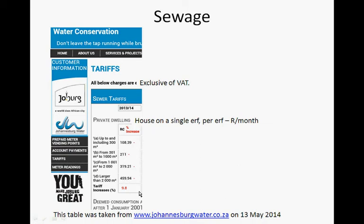If you have a property larger than 2000 square meters, you will pay R459.94 per month. They also show the tariff increases, probably for the next year, since this was for the 2013–2014 year. Let's say you have a property between 301 and 1000 square meters — how much will you pay on sewage for the next year?